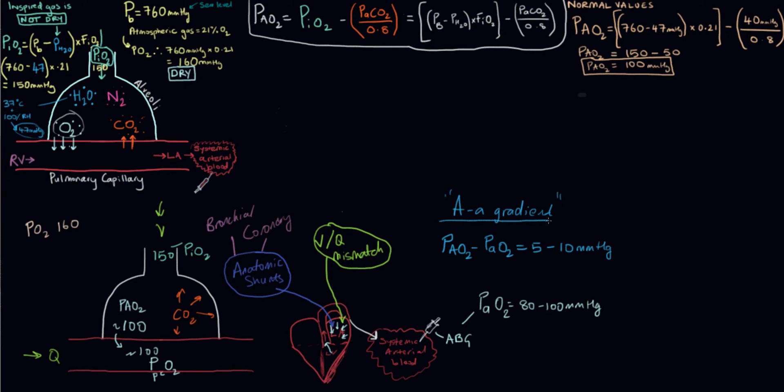This is called the AA gradient, and it's used clinically quite a lot. It's useful in helping us figure out what's going on when someone presents with hypoxemia. Let's talk about a patient who is breathing 50% oxygen, and they're doing that at sea level.